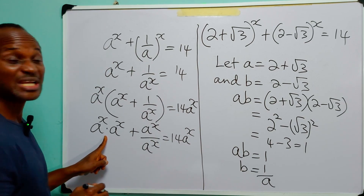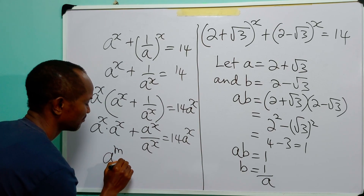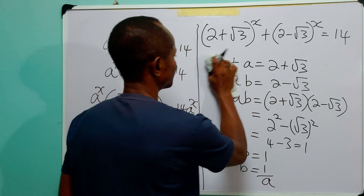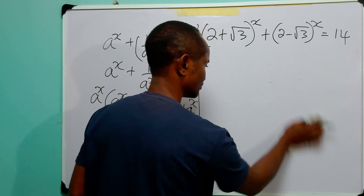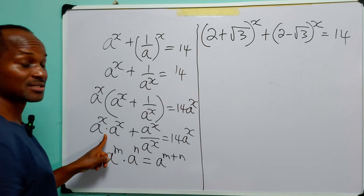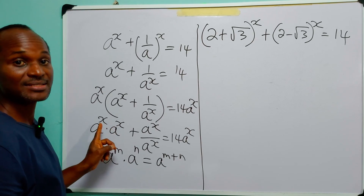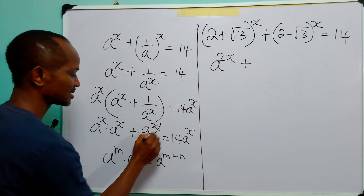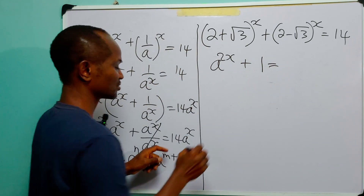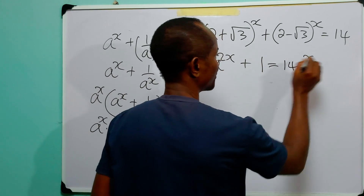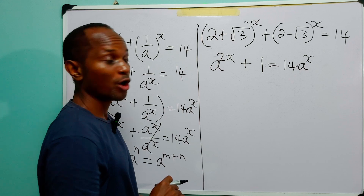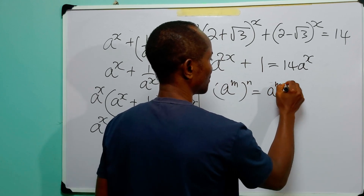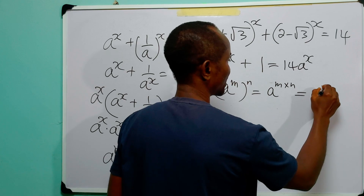Let us remember the law of indices that says a^m multiplied by a^n is equal to a^(m+n). Also, a^m raised to power n is equal to a^(m×n), and hence equal to a^n raised to power m.